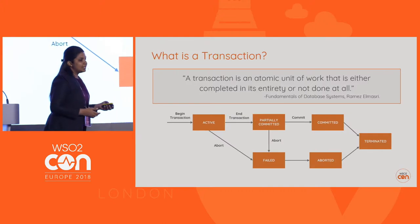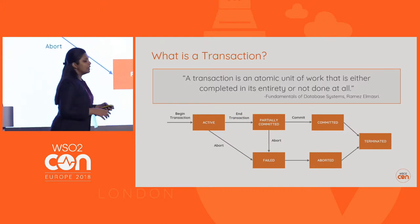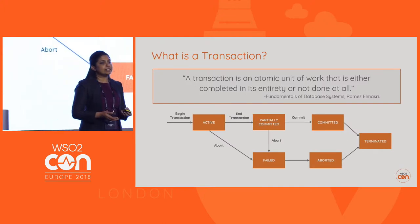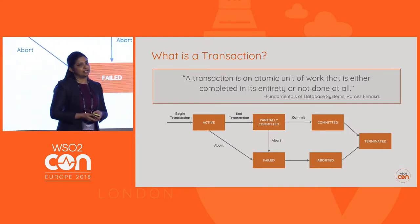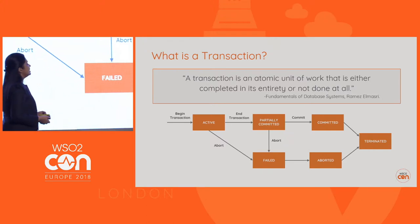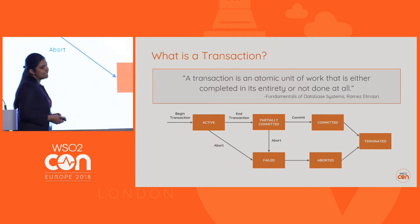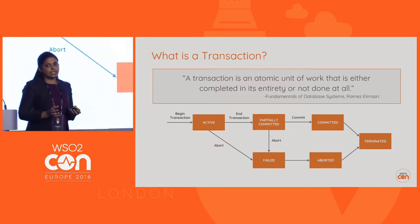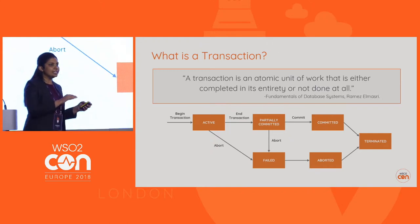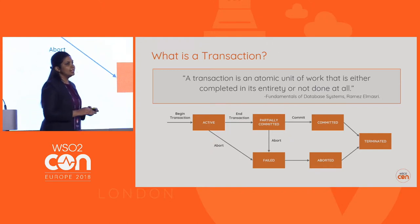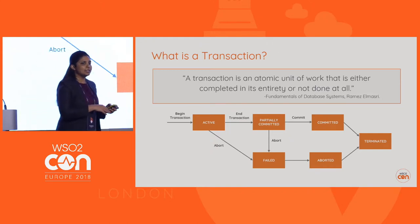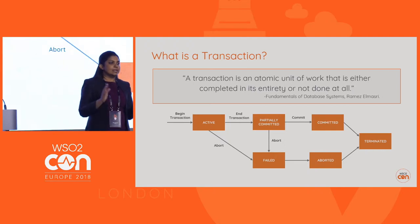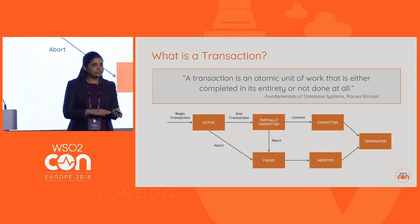Before we go into detail, let's see what a transaction actually is. According to the definition, a transaction is an atomic unit of work that should complete in full or not be done at all. During its execution, a transaction will go through multiple states. When it starts, it will be in the active state.